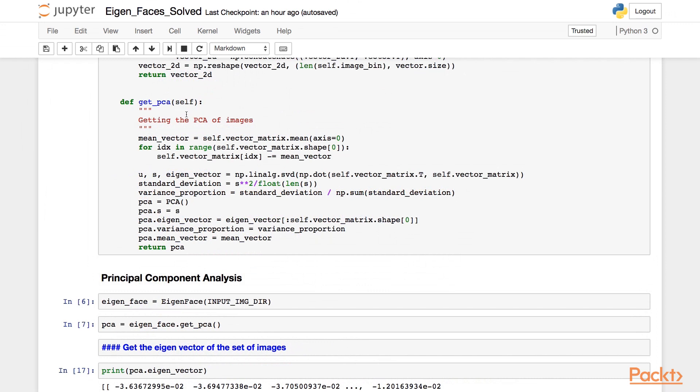Next is the function that computes the PCA, which is getPCA in this case. As the first step, we find the mean vector for which we use the mean function on the vector matrix applied on the axis 0. Next, based on the PCA algorithm which we have already seen, we subtract this mean vector from every other image vector.